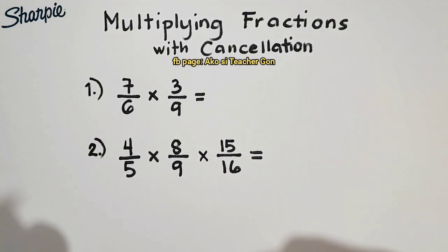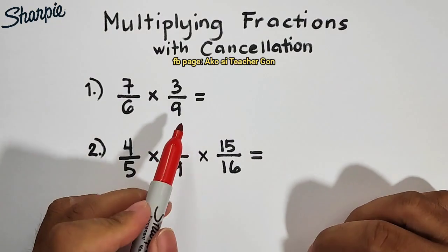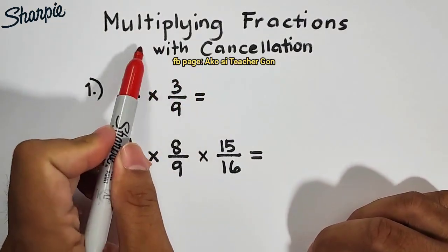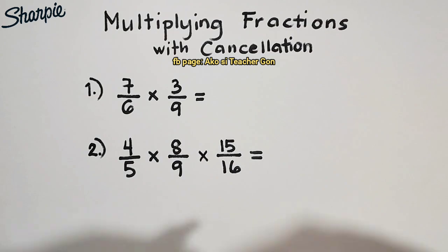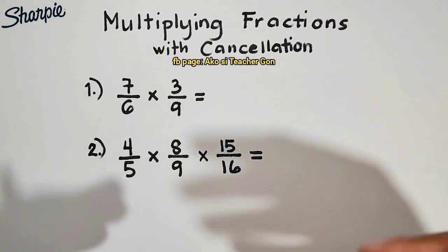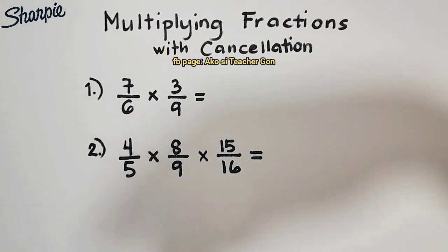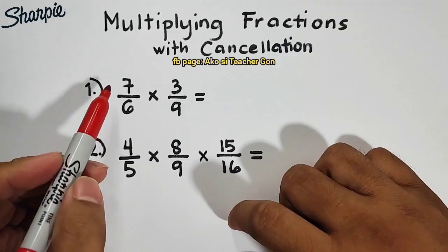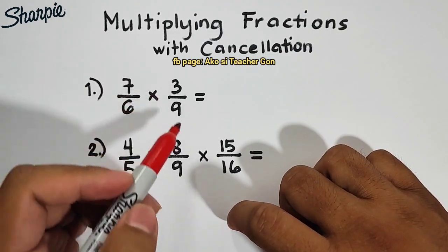So, we have here two different examples to show you how to do or how to perform multiplying fractions with cancellation. So, without further ado, let's do this topic. So, basically, number one, we have 7 over 6 times 3 over 9.